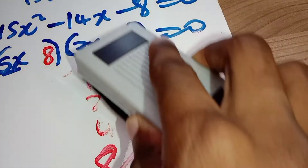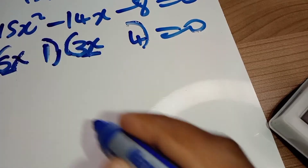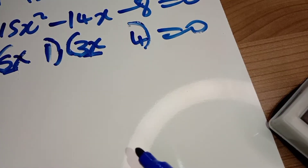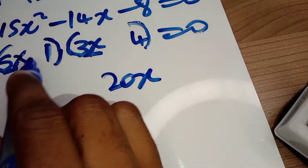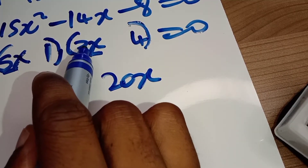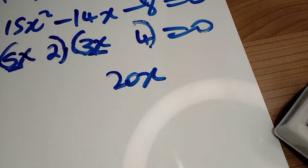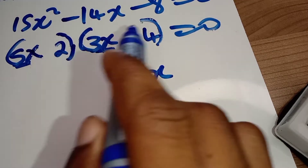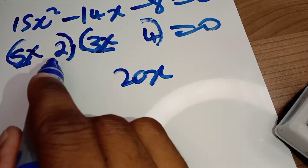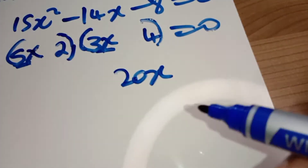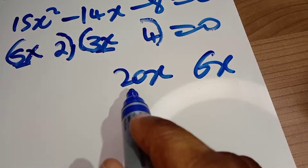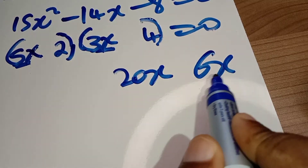That means the factors we must try are 4 and 2. We try 4 here and 2 there. With x in each bracket, 5x multiplied by 4 gives us 20x. Here it should be 2, because 2 multiplied by 4 gives us 8. Then 2 multiplied by 3x gives us 6x. You can see that 20x subtract 6x gives us 14x.